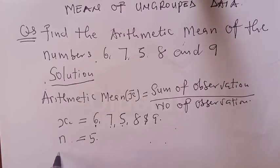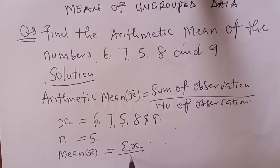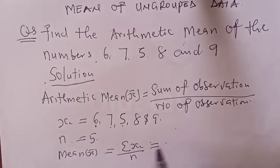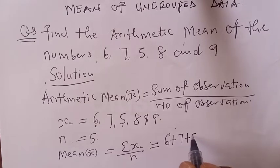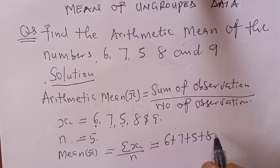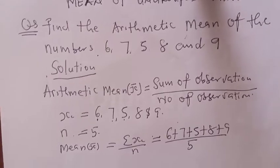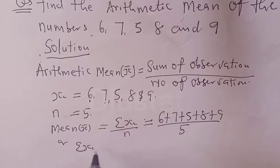Therefore, our mean x-bar is equal to the summation of xi over n. That is, when you add all the xi together — 6, 7, 5, 8, and 9 — over n, you get your mean, which is equal to 6 plus 7 plus 5 plus 8 plus 9 over 5.